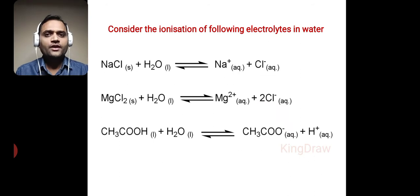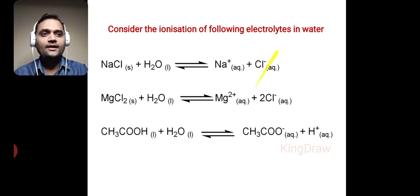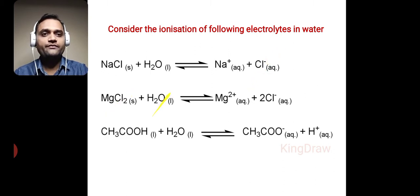Consider the ionization of the following electrolytes in water. If we have NaCl (solid) and add it into water, there is formation of Na⁺ and Cl⁻ (aqueous). Similarly, MgCl₂ when added into water will form Mg²⁺ and 2 chloride ions.